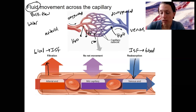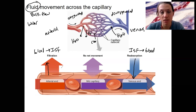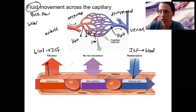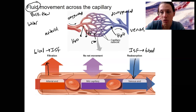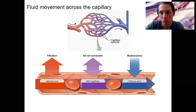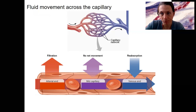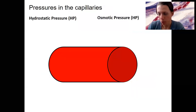Now we're going to look at what causes this — how these net movements due to pressure changes change across circulation. It's going to be due to differences in pressure, and of course there's more than one type of pressure. We've already talked about one type: blood pressure.